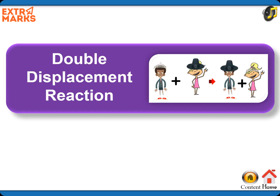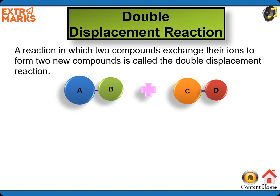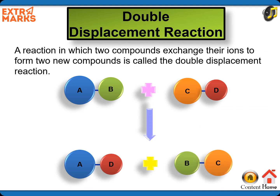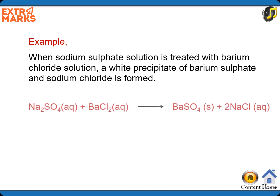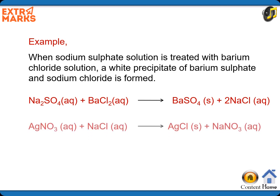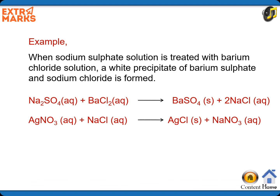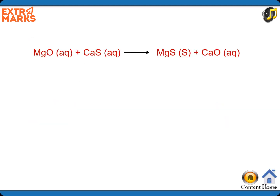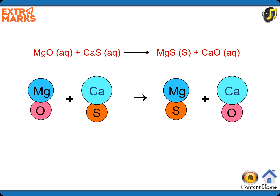Double displacement reaction: a reaction in which two compounds exchange their ions to form two new compounds. For example, when sodium sulfate solution is treated with barium chloride solution, a white precipitate of barium sulfate and sodium chloride is formed. When silver nitrate solution is treated with sodium chloride solution, a white precipitate of silver chloride and sodium nitrate is formed. When magnesium oxide solution is treated with calcium sulfide solution, a white precipitate of magnesium sulfide and calcium oxide is formed.